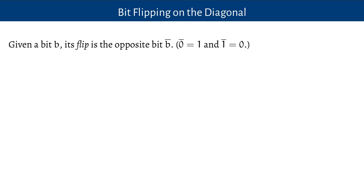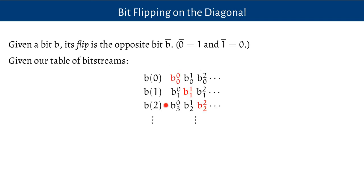To do this, we will use the notion of the flip of a bit. Given a particular bit — 1 or 0 — its flip is the opposite bit, written with a line over the top. So the flip of 0 is 1 and the flip of 1 is 0. Given our table of bit streams, we're going to focus on the bits down the diagonal: bit 0 in stream 0, bit 1 in stream 1, bit 2 in stream 2, bit 3 in stream 3, etc.